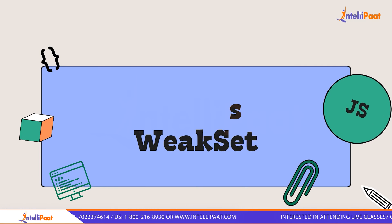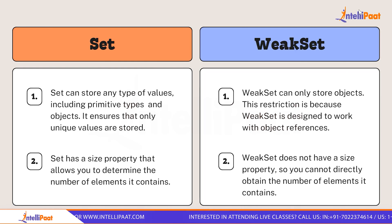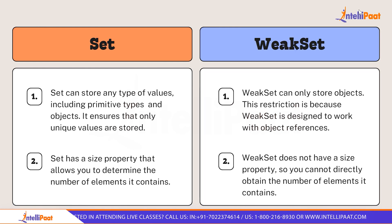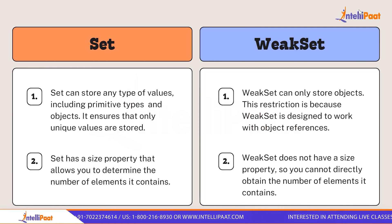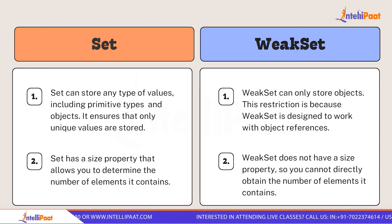The differences between Set and WeakSet: Set can store any kind of values including primitive data types and objects, with unique values only. But WeakSet only works with objects — it is restricted to objects. Whenever you're dealing specifically with objects, you can use WeakSet. Also, you can define the size of a regular Set, but WeakSet has no specific size — you cannot restrict it.